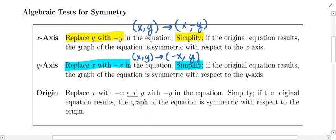the graph is going to have y-axis symmetry. If we do not get the original equation back, then the graph does not have y-axis symmetry.